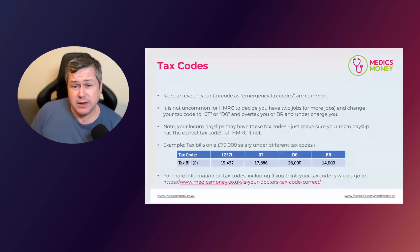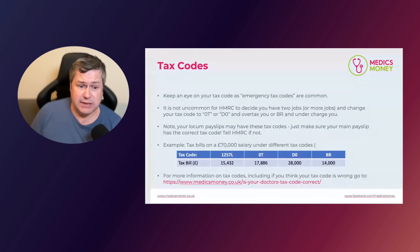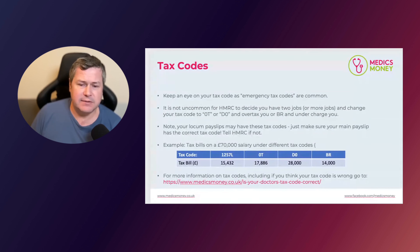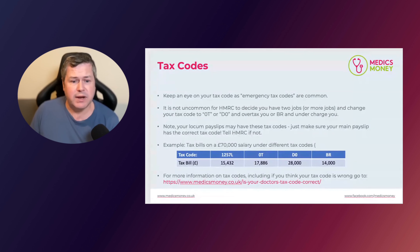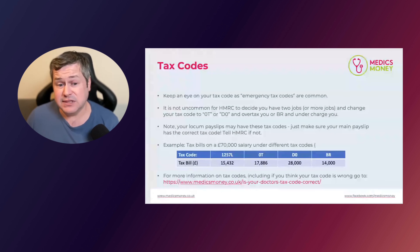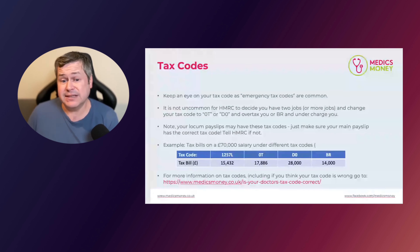If you see a BR code, that will often mean you're being undertaxed. In the £70,000 example, you would be paying £14,000 when you should be paying £15,432. So it does work both ways — but HMRC are less likely to put you on a BR code than they are on a 0T, D0, or SD1 code in Scotland.